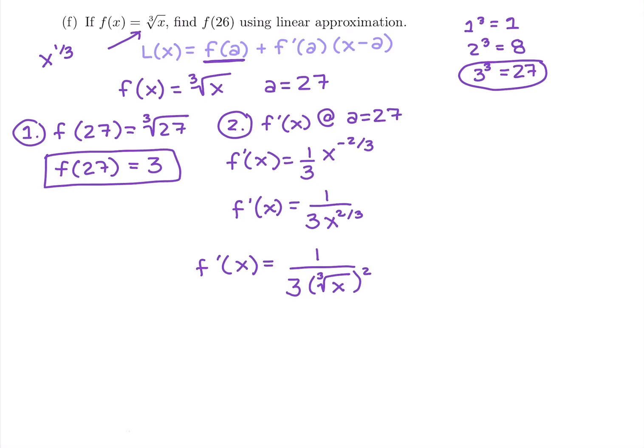2/3: 2 is the power, 3 is the root. And if we write it like that, then we can plug in f prime of 27 to be 1 over 3 times the third root of 27, which we know to be 3, and then it gets squared.